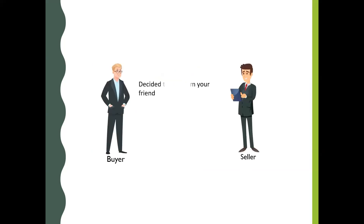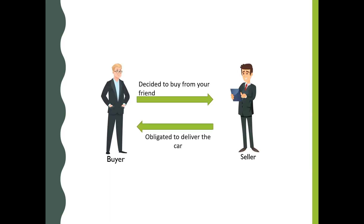On the other hand, if you had decided to buy from your friend, then your friend is obligated to deliver the car to you as agreed, and your friend has a potential to incur unlimited loss. Here, the contract is between you — the buyer or option holder — and your friend — the seller or option writer. The underlying asset is the car, the strike price is 3 lakhs, the expiry date is the last day of the 3rd month, and the premium amount is 30,000 rupees. Since you are buying the car on the last day of the 3rd month, this is a European option.